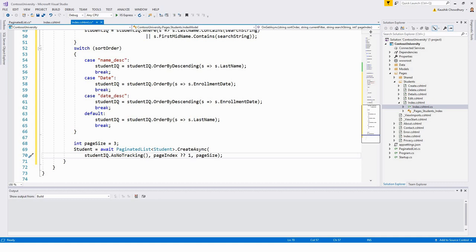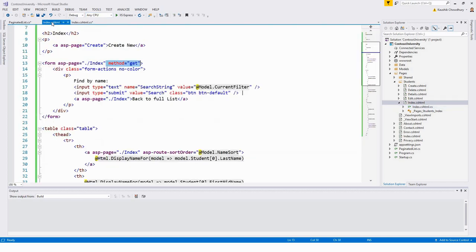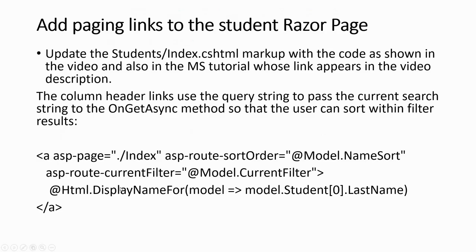Now update the markup in Index.cshtml. This part is also covered in the tutorial — add paging links to the student Razor page by updating Students/Index.cshtml markup as shown, also following the Microsoft tutorial link given in the video description. There are quite a few code changes in the table section — the column header links use the query string to pass the current search string to the OnGetAsync method.